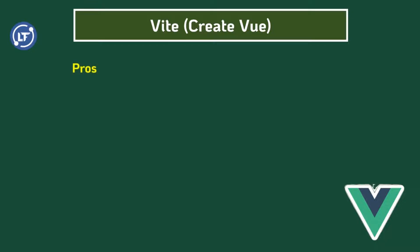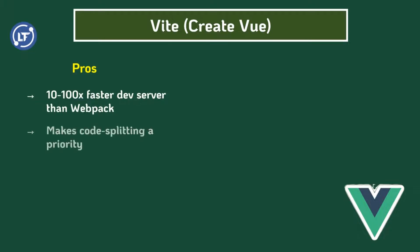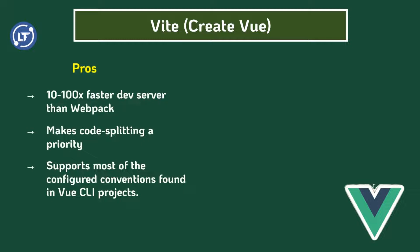Now let's look at the second method, which is Vite or create-vue. Number one: it is way faster than making use of the Vue CLI with webpack — it can be 10 to 100 times faster. Another thing is it makes code splitting a priority, which is different from the approach that the traditional Vue CLI with webpack would take.